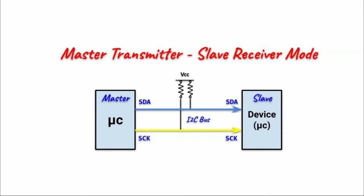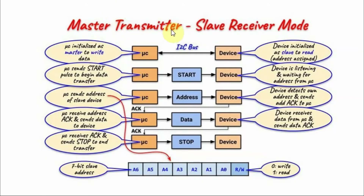The I2C network can be configured in different modes. We could have a master transmitter slave receiver mode, or a master receiver slave transmitter mode, and so on. In this video, we'll be looking into the master transmitter slave receiver mode, where one microcontroller is programmed as a master device interfaced with another microcontroller programmed as a slave device. The slave device has an address assigned to it.